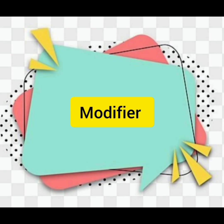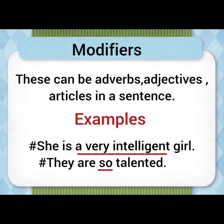Then the next element is modifiers. It's obvious with the name — these can be adverbs, adjectives, or articles in a sentence. For example, 'She is a very intelligent girl' — apart from subject, verb and object, a very intelligent are modifiers of the noun girl. 'They are so talented' — they is subject, are is verb, talented is an adjective, and so is used to modify talented — it's an adverb. That's how we can use modifiers in our sentences.